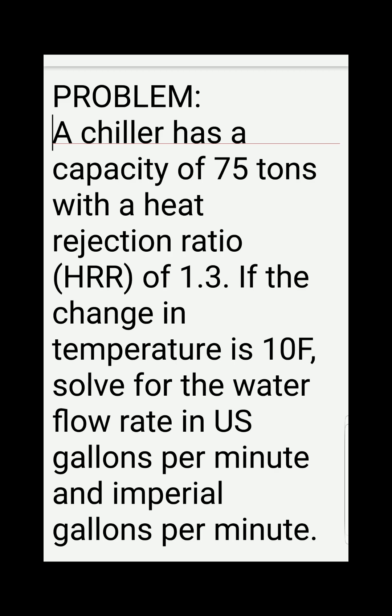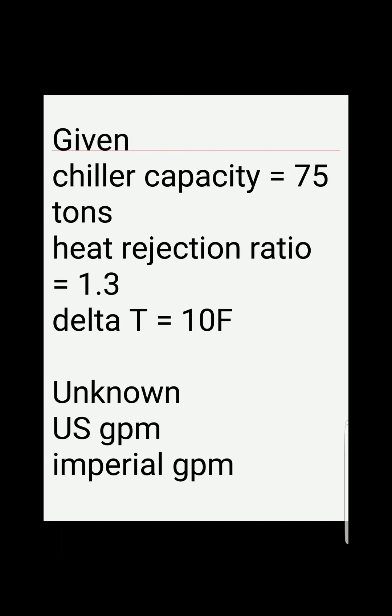We have a problem here: a water chiller has a capacity of 75 tons with a heat rejection ratio (HRR) of 1.3. If the change in temperature is 10°F, solve for the water flow rate in US gallons per minute and imperial gallons per minute. Given: chiller capacity of 75 tons, heat rejection ratio of 1.3, and Delta T of 10°F. Unknowns: US gallons per minute and imperial gallons per minute.